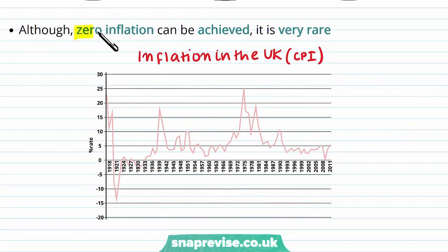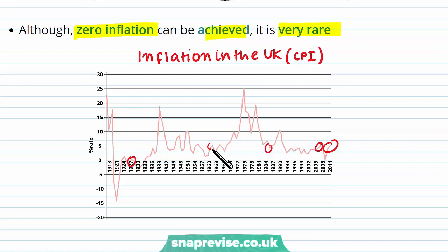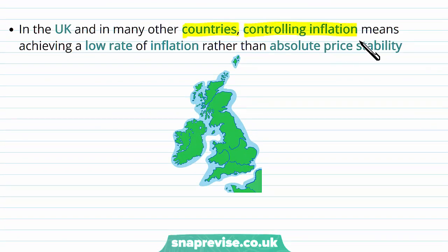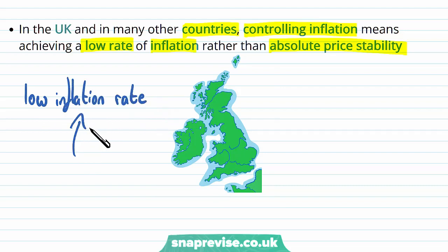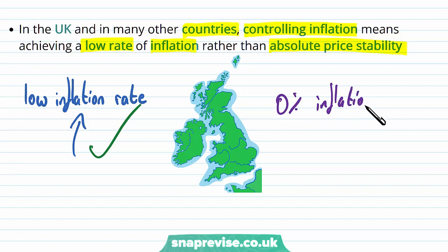In the data, a zero inflation rate can be achieved but is very rare. Generally we are not looking for a zero percent inflation rate, because increasing prices can mean increasing demand, which stimulates an economy into production. So having a positive inflation rate is desirable. In the UK and many other countries, controlling inflation means having a low rate of inflation rather than absolute price stability — some positive inflation is more desirable than a zero percent rate.